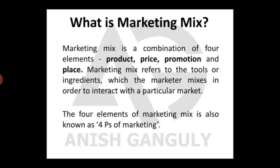First, let's understand what is Marketing Mix. It is the combination of all four elements — Product, Price, Promotion, and Place. It refers to the tools or ingredients which the marketing manager mixes in order to interact with a particular market. These four elements are mixed according to the need and particular requirement of the market or the people living there, according to their demand. The four elements of Marketing Mix are also known as the Four Ps of Marketing.